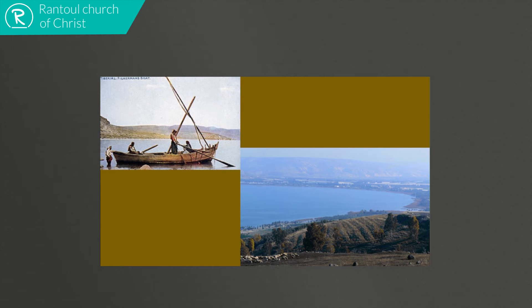Question number 5 says, when these men got to the shore, what did they find? We're not told if it was miraculously prepared, but the text says in verse 9 that as soon as they had come to land, they saw a fire of coals there with fish laid on it and bread. Jesus provided for them as he had done for others during his ministry. Just as the instruction about casting the net and the huge catch were reminders of a previous miracle, it seems likely that the fish and bread prepared for them was a reminder of the feeding of the 5,000.